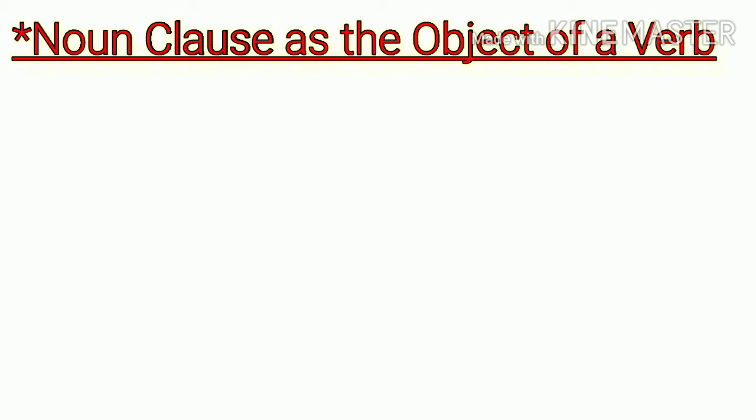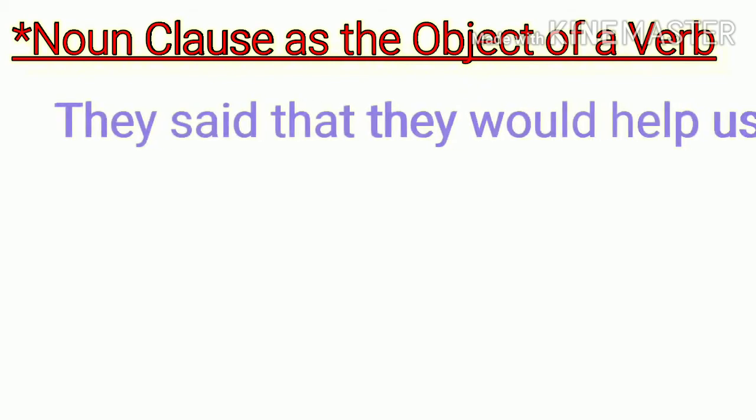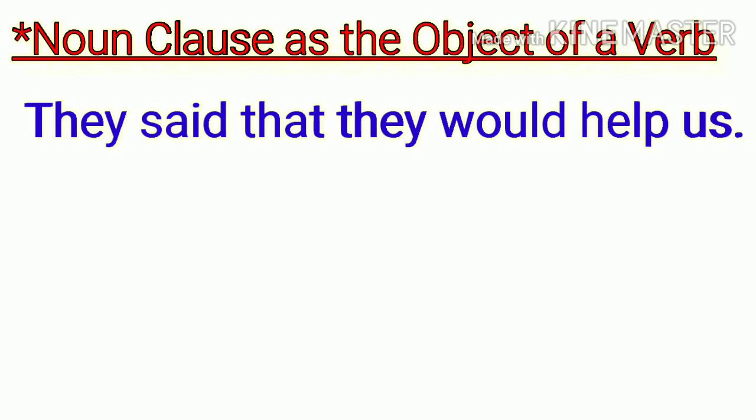Noun clause as the object of a verb: They said that they would help us. Yes, that is the clause, and the subject and predicates are the same as the object of a verb. A predicate.